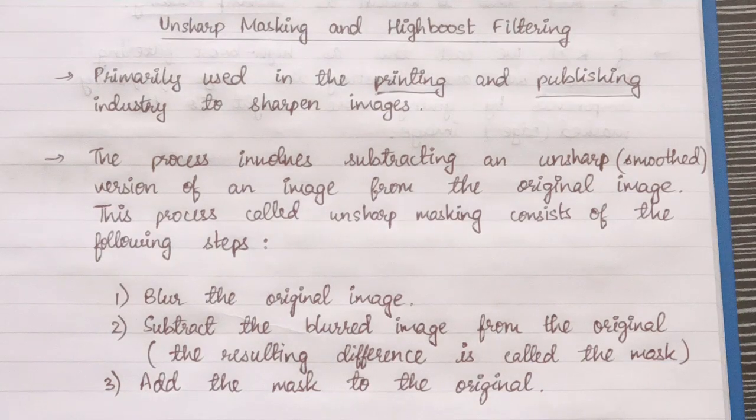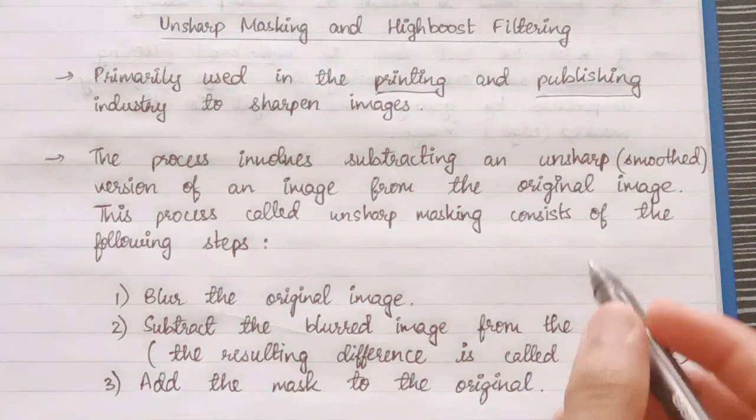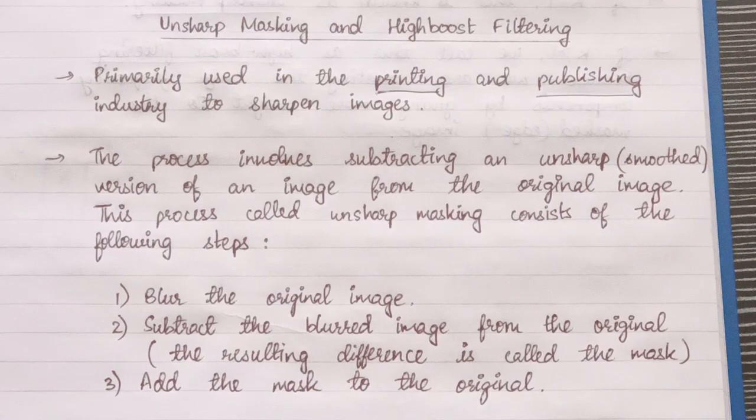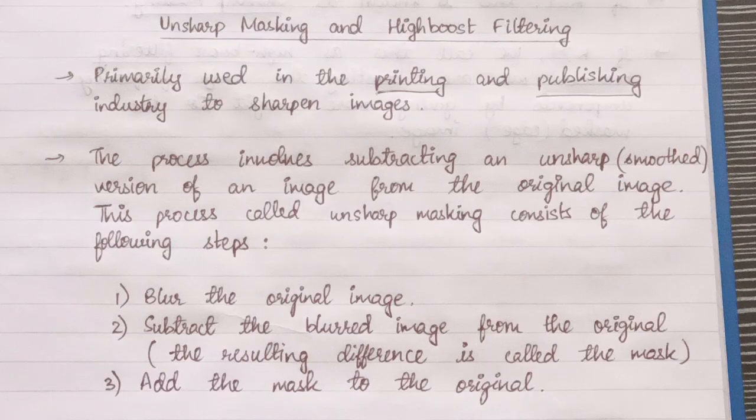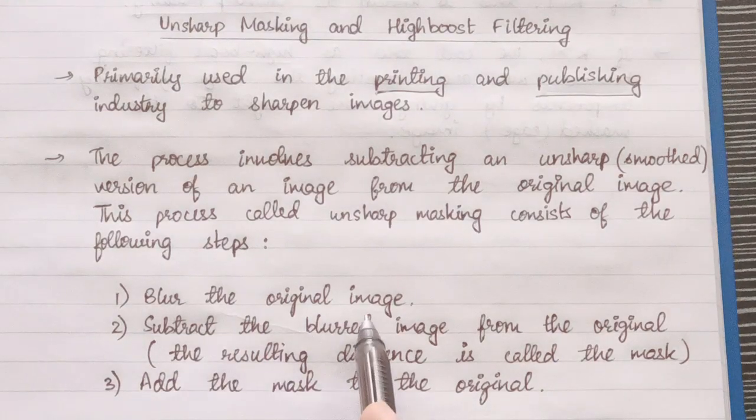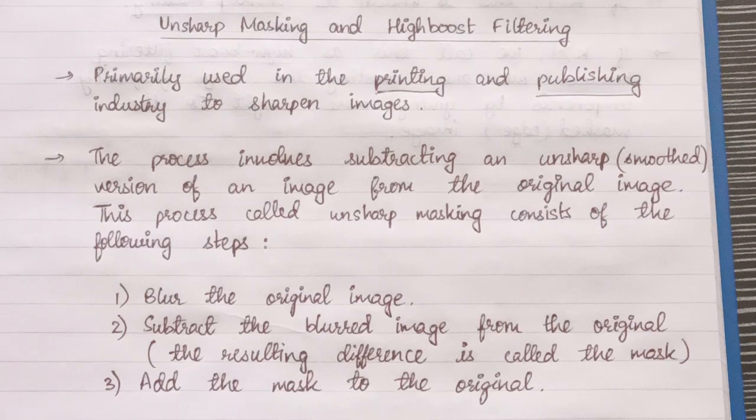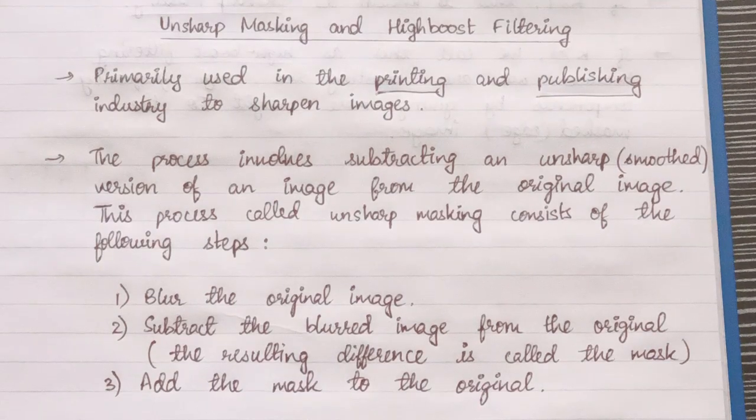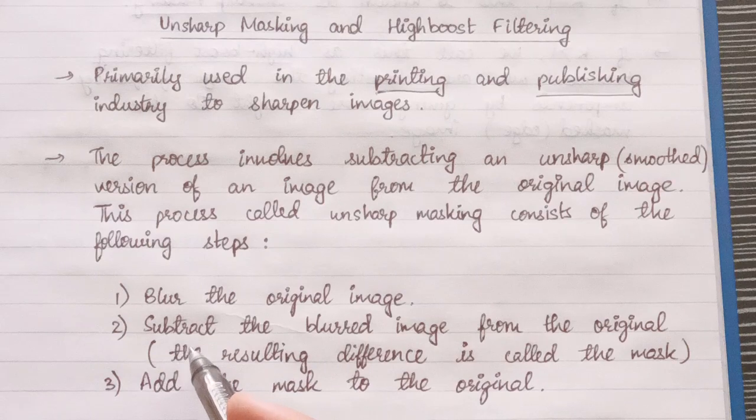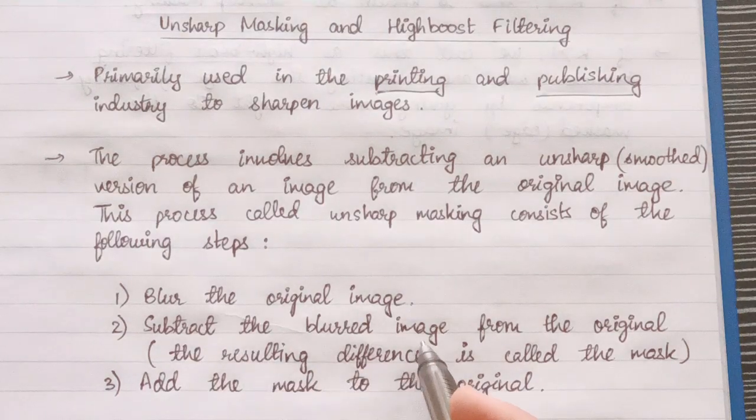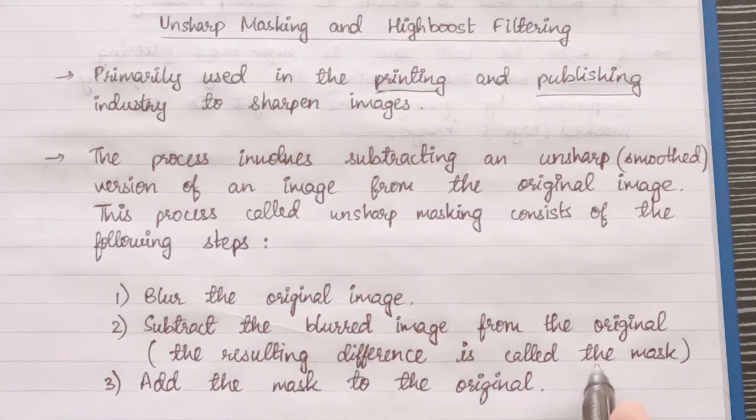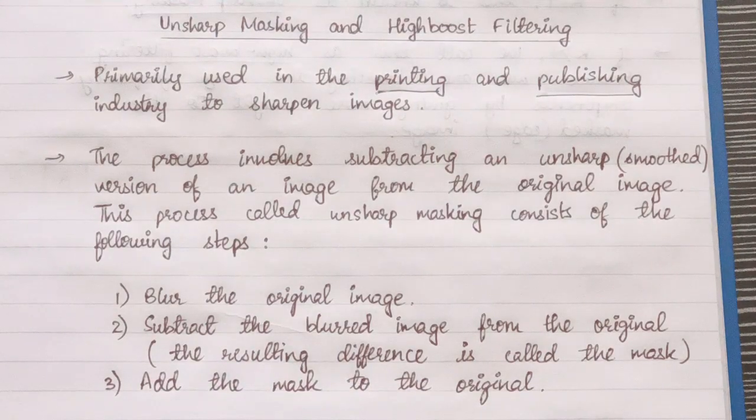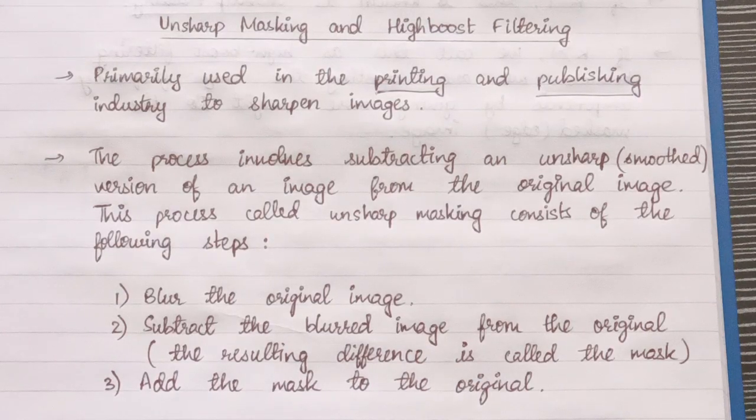The process involves subtracting an unsharp or smooth image from the original image. This process called unsharp masking consists of the following steps. The first one is blurring the original image. We know that smoothening will suppress most of the high frequency components. The second step is subtracting the blurred version of the image from the original image. The resulting difference is called the mask.